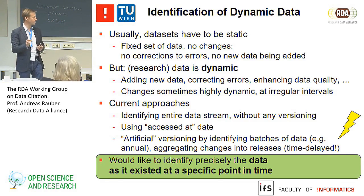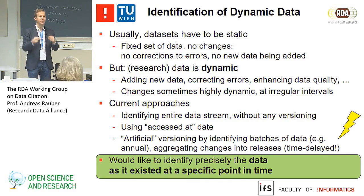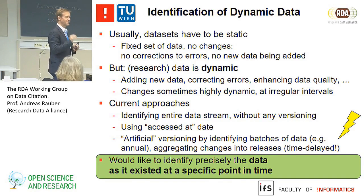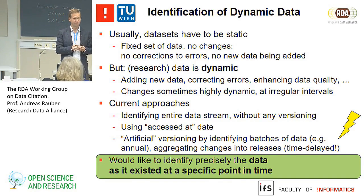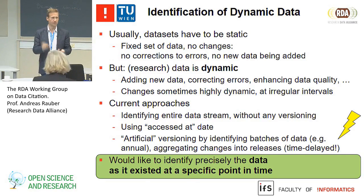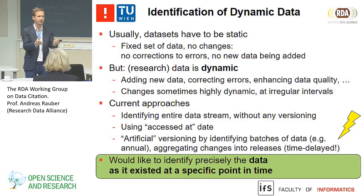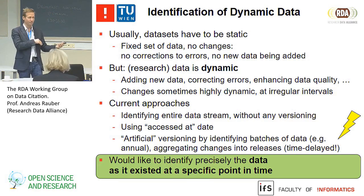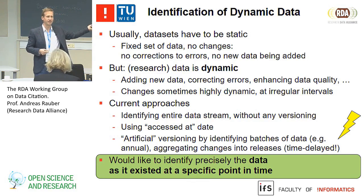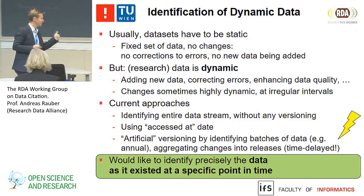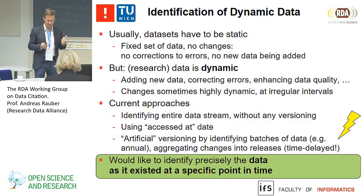What we said is: what we want is to identify—and I use 'identify' as the basis for citation—the data precisely as it existed at a specific point in time, no matter which changes occurred before or afterwards. If I do a study and want to communicate to you which data I was using, and you want to compare your model with my model on the same data, that's exactly the data you need to get hold of—not as it appeared a week after, with potential changes that might impact the results. So, number one: managing the dynamics in the data.